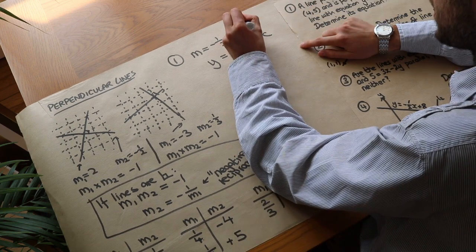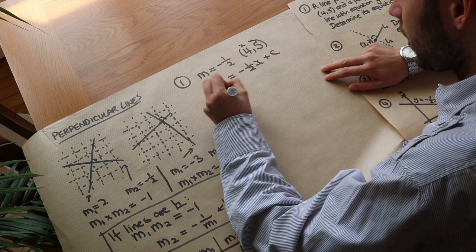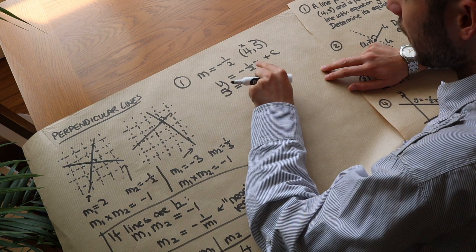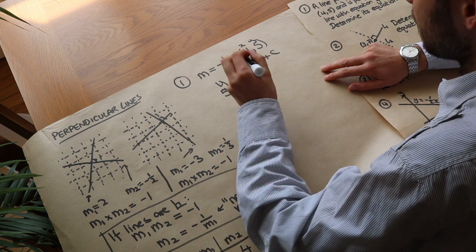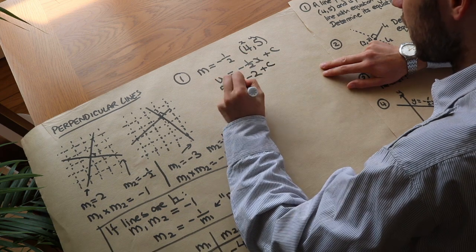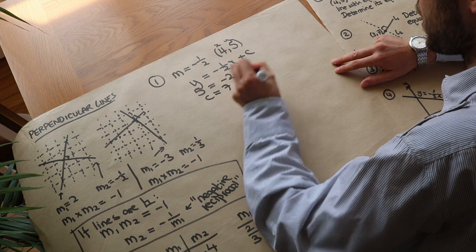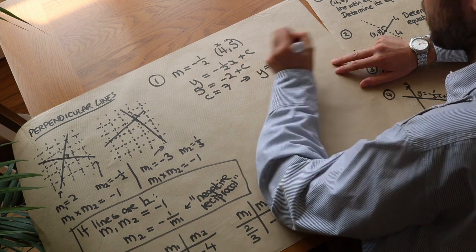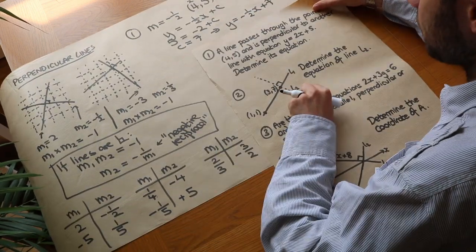So y = 5 is equal to minus a half times 4. Half of 4 is 2, but it's negative, so it's minus 2 plus c. Add 2 to both sides: c equals 7. So the equation is y equals minus a half x plus 7. We've managed to answer this first question.